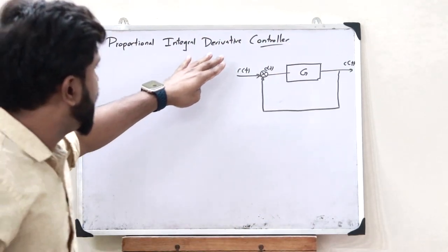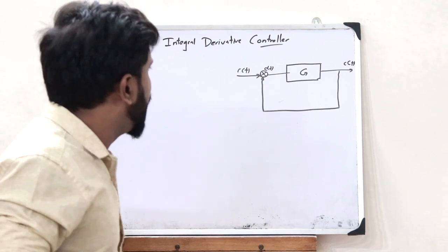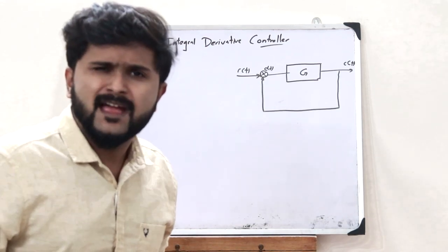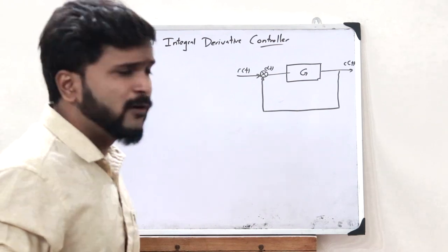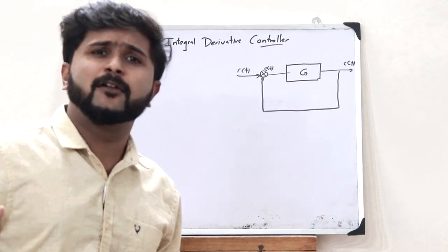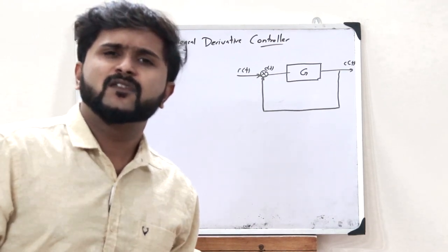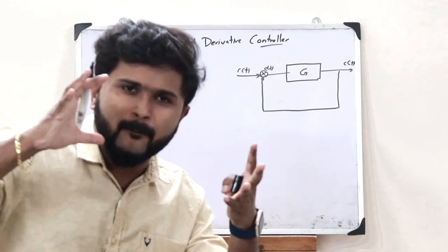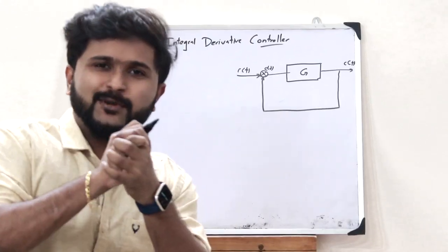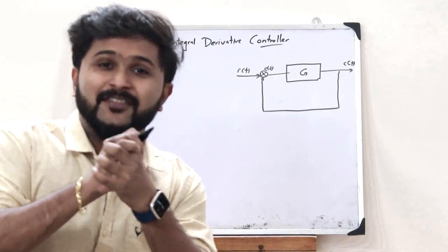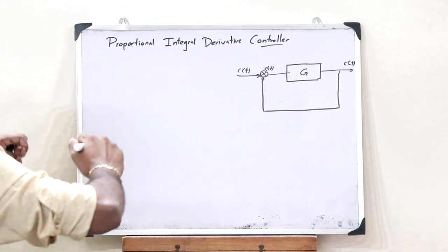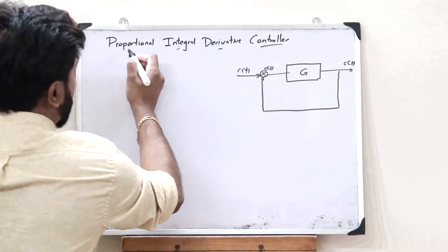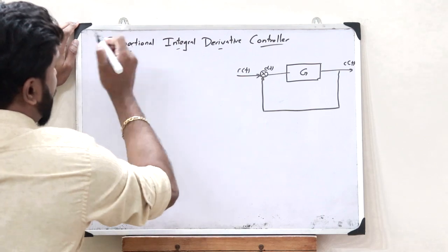So here in this particular control system, if we need to control it, that is when we use a particular controller. But when we use a derivative controller, there is a problem for the steady state error. And when we use an integral controller, there is a problem for the stability. So therefore, what we do is combine these two together — that is when we obtain a proportional integral derivative controller.